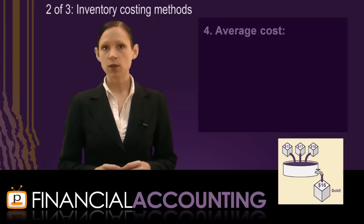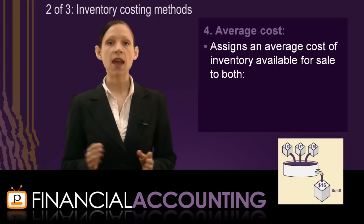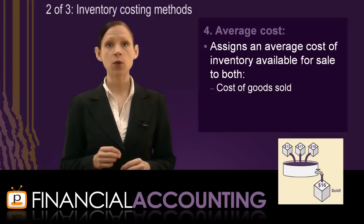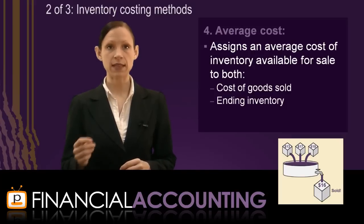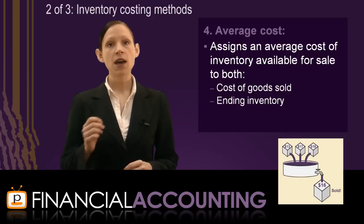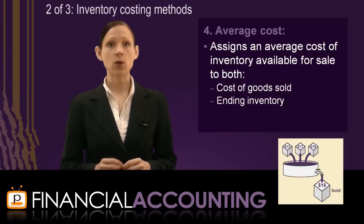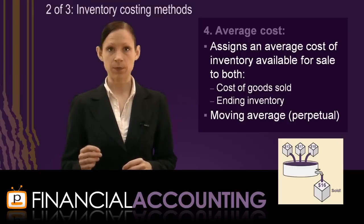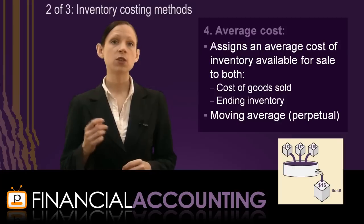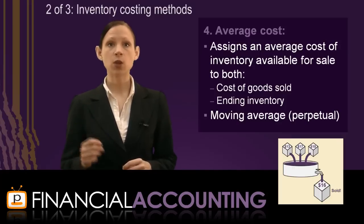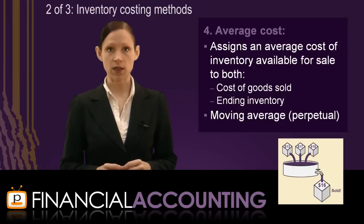The average cost method assigns an average cost of the inventory available for sale to both cost of goods sold and ending inventory. Under the perpetual system, the average cost method is known as the moving average cost method, because a new average cost is calculated after each purchase, so the average cost moves over time.